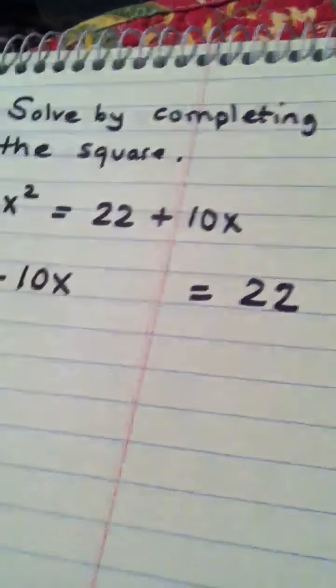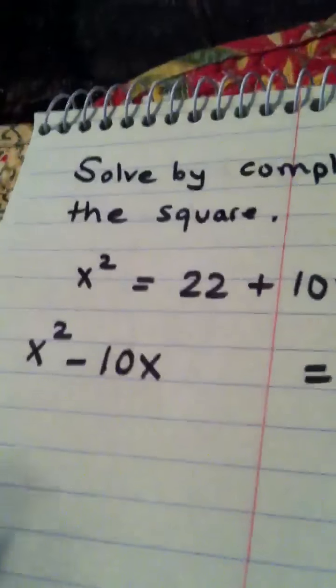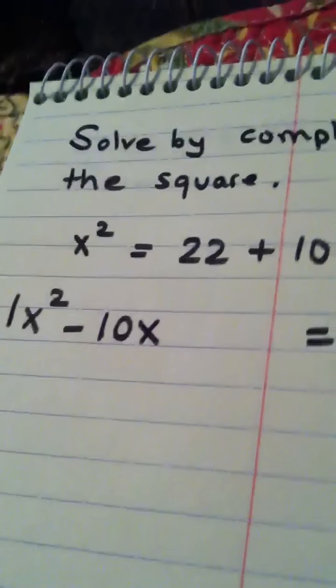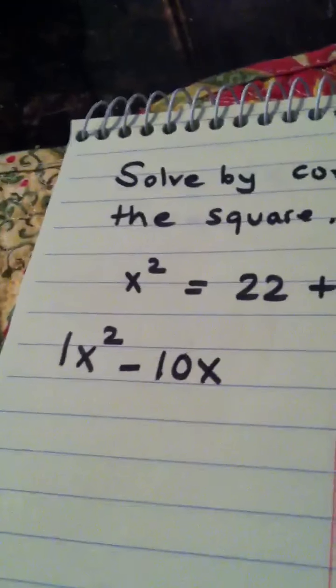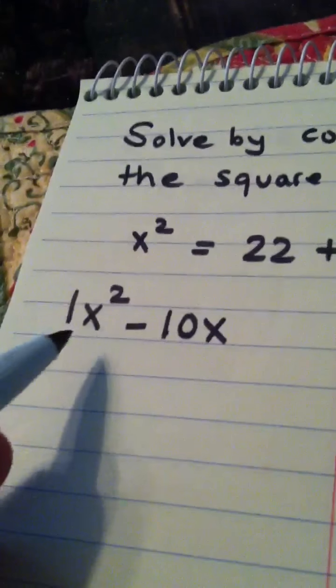X's together on the left, constants on the right. My next thing to make sure of is that the leading coefficient is a 1, because you can't complete the square until it is. Well, it is a 1, so we're good to go.